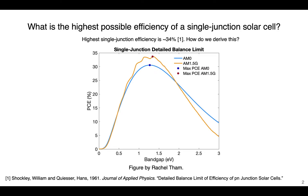Now that we know this fundamental limit, it's important to understand what kinds of losses go into this efficiency. Why is the efficiency not 100%? Why is it at only 34%? We need to understand these losses and why the limiting efficiency is at this number in order to understand how we can improve our device and what kinds of losses we need to reduce that are contributing most to reducing our efficiency.